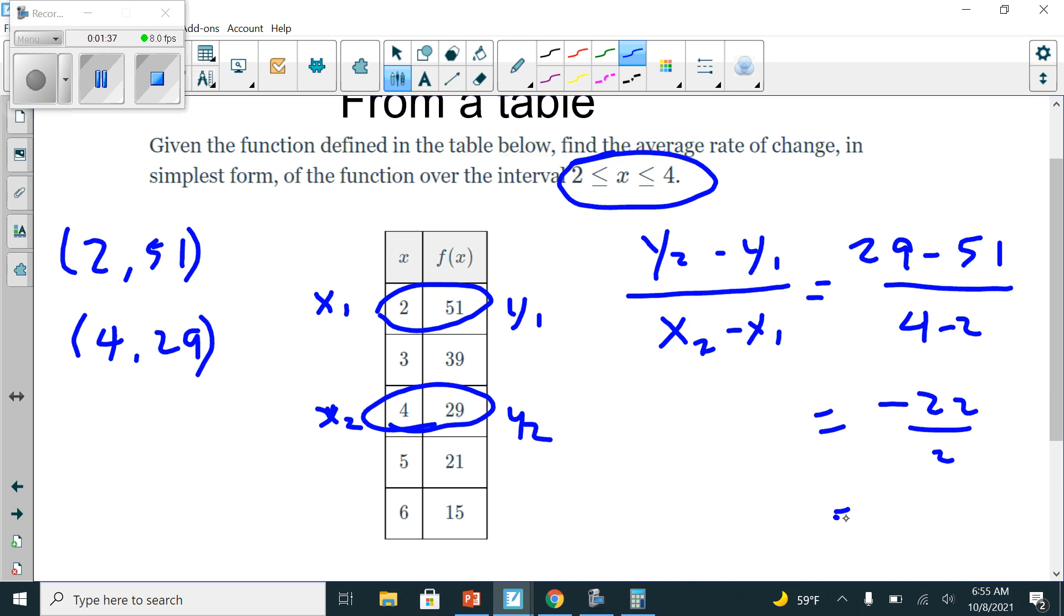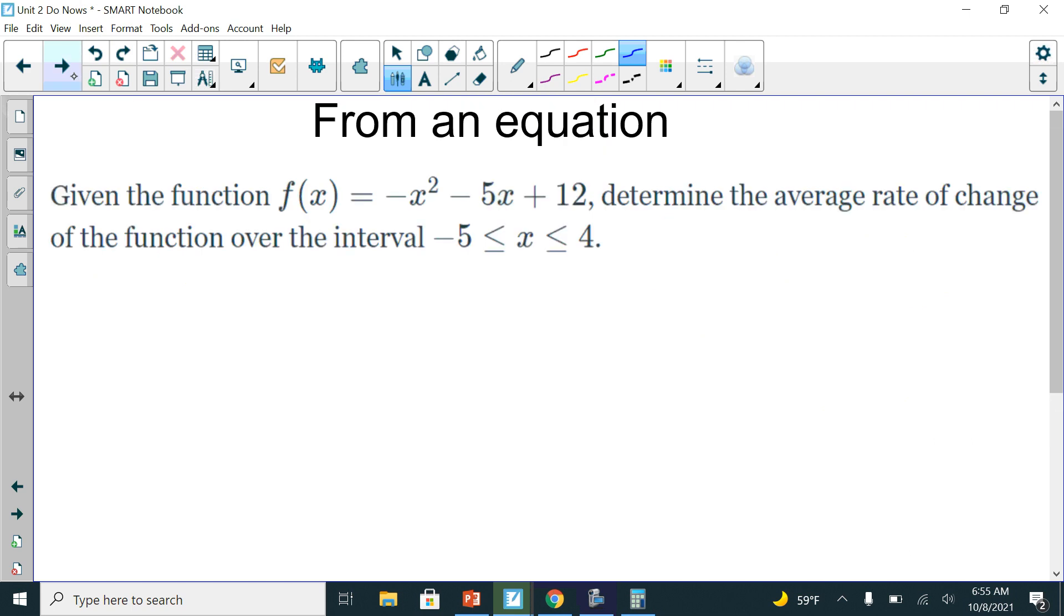Negative 22 divided by 2 is negative 11. So my slope, aka my average rate of change, is negative 11. Done. I'm going to move on to the next thing, which is finding the same thing from an equation.